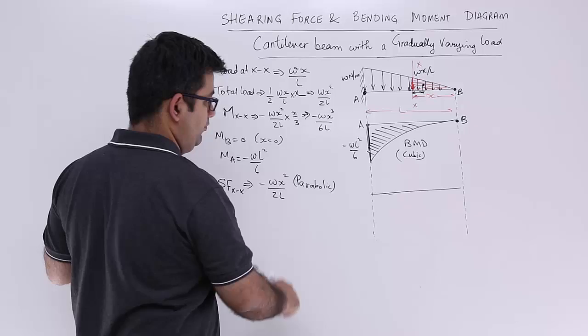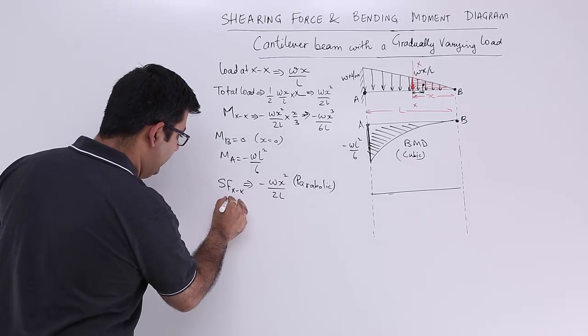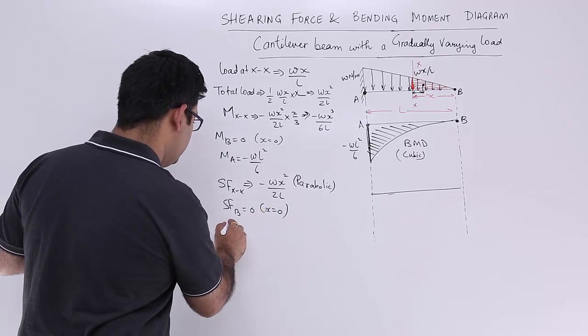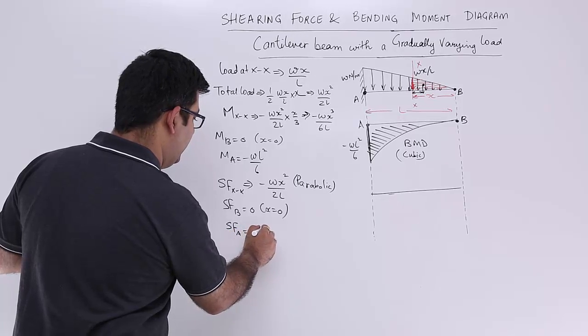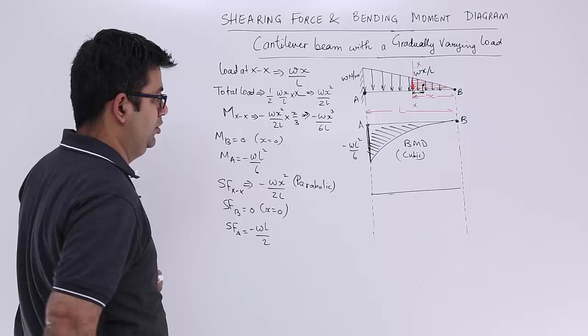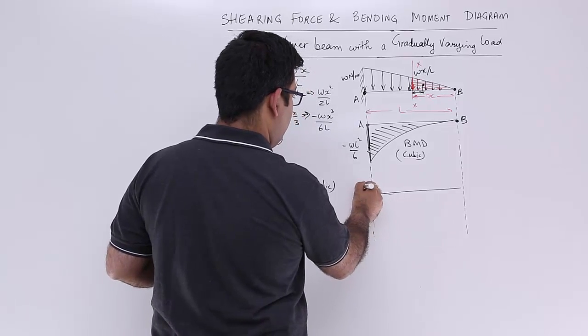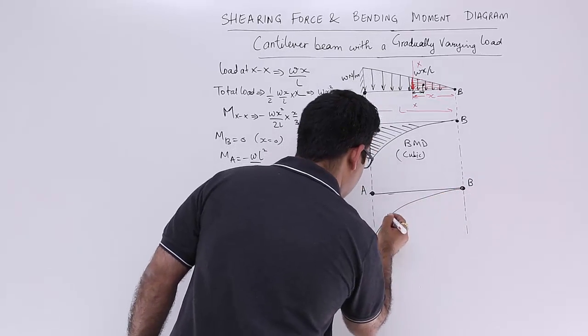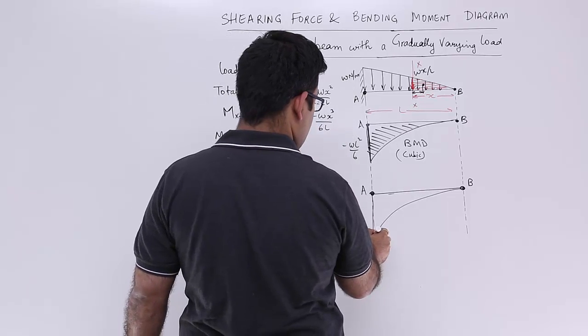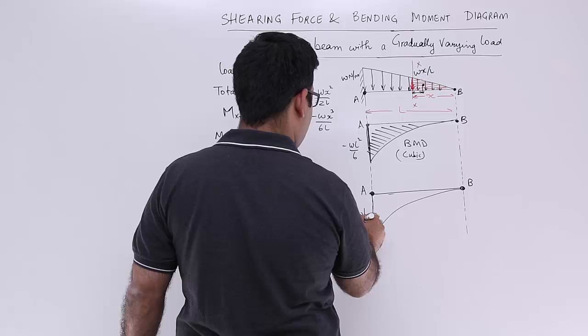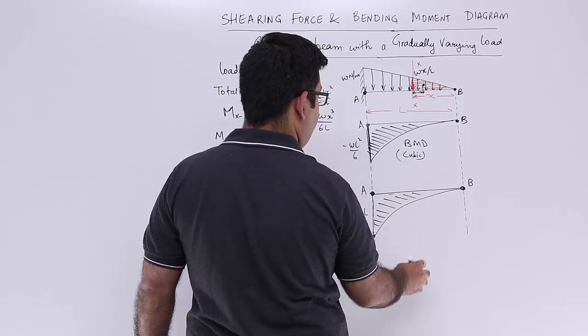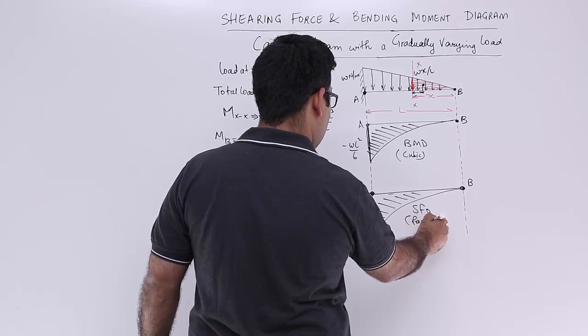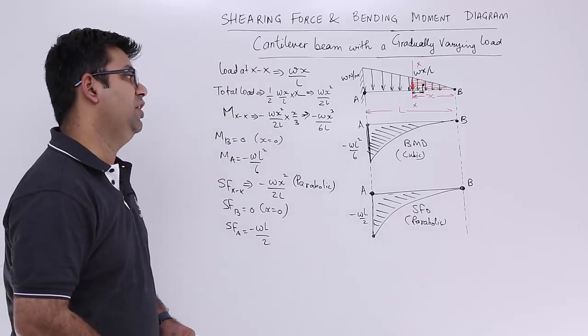So shearing force at A would be minus WL upon 2. So this is point A and this is point B and this will be a parabolic curve. So this will be minus WL by 2, so this is the SFD, which shows a parabolic variation of the shearing forces.